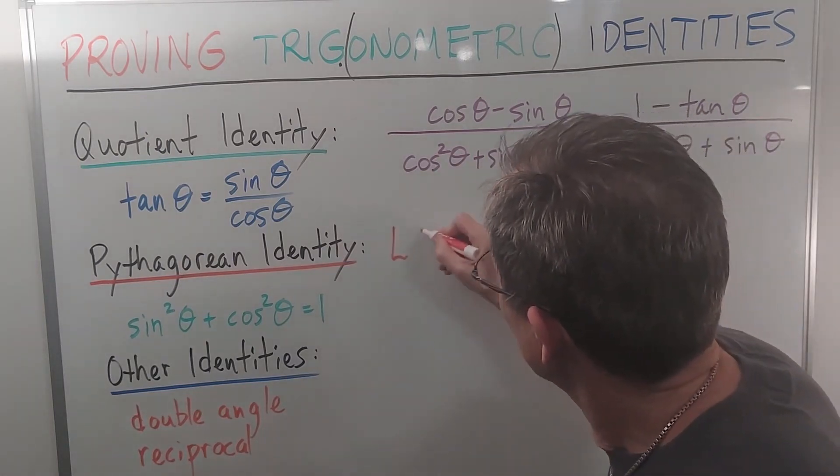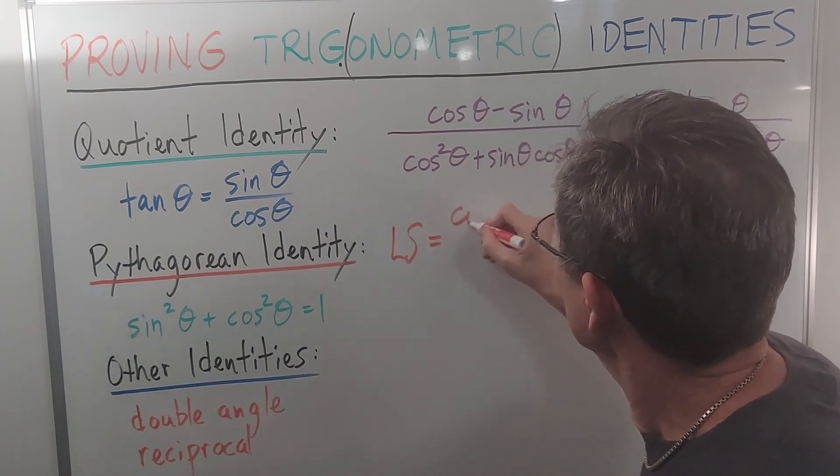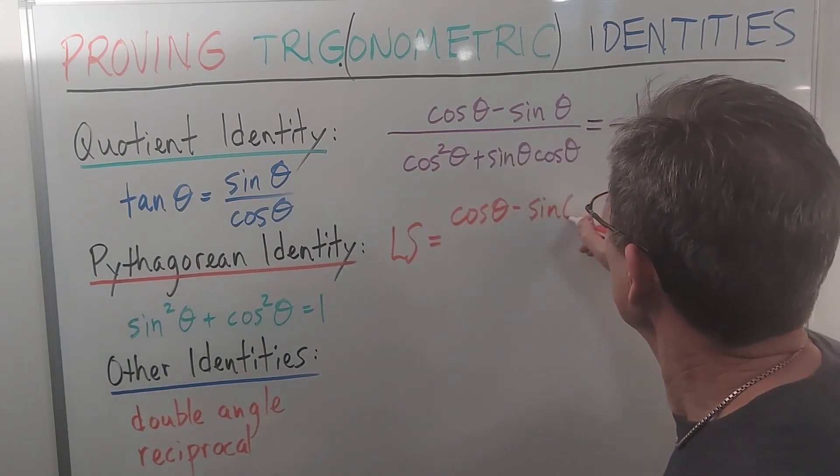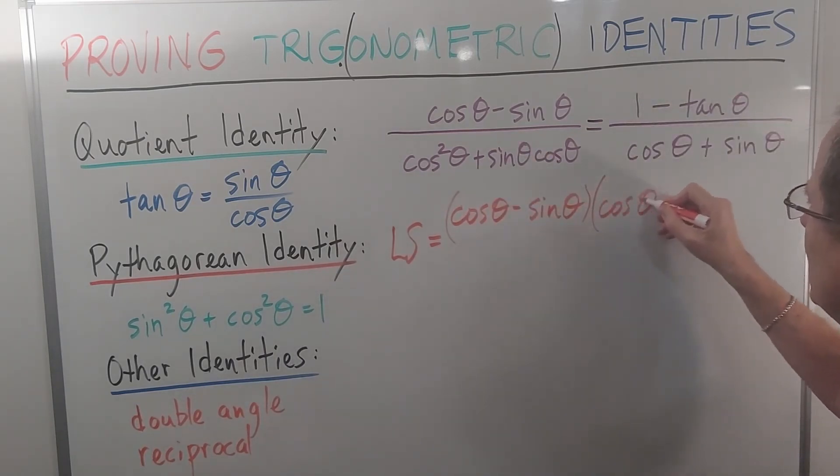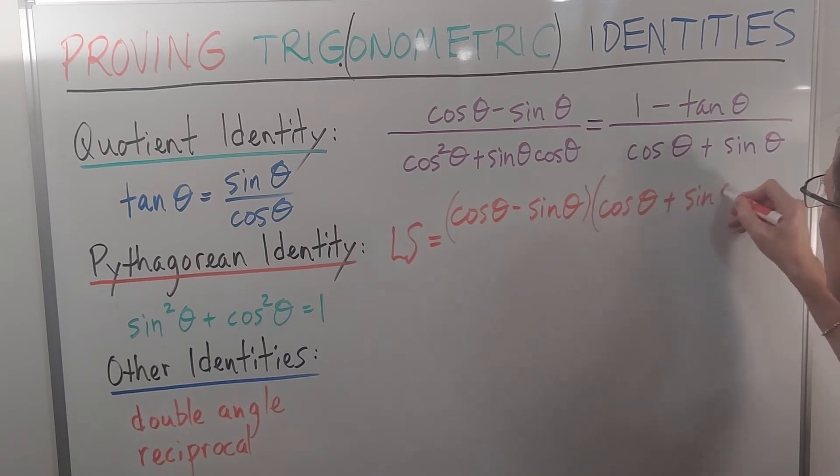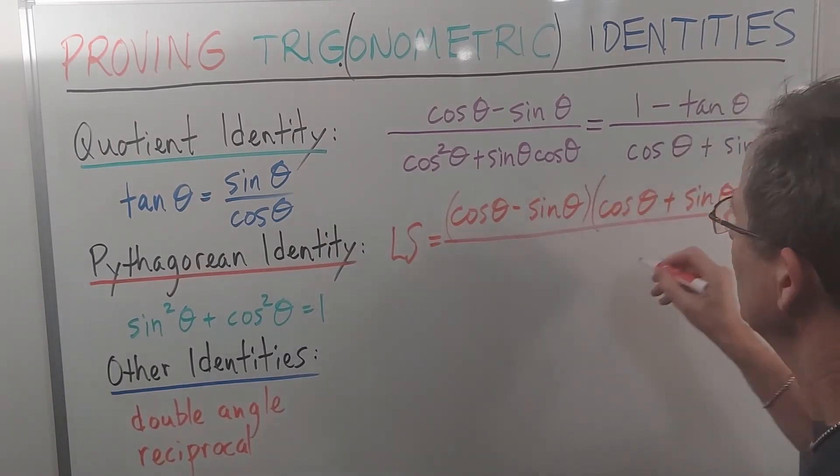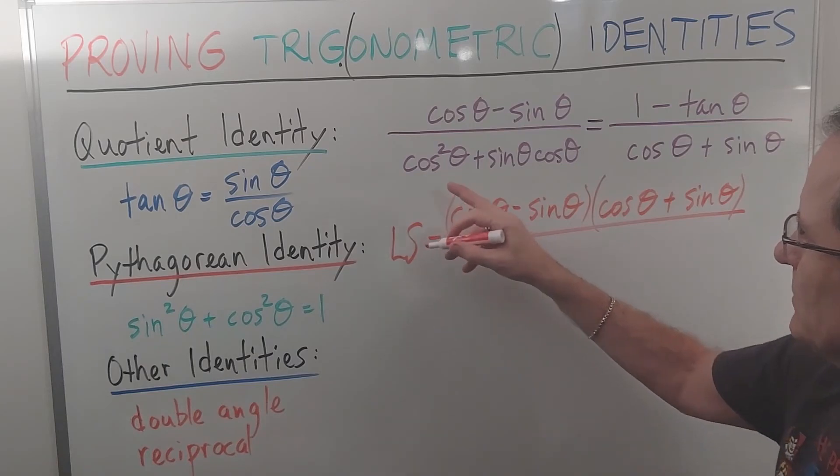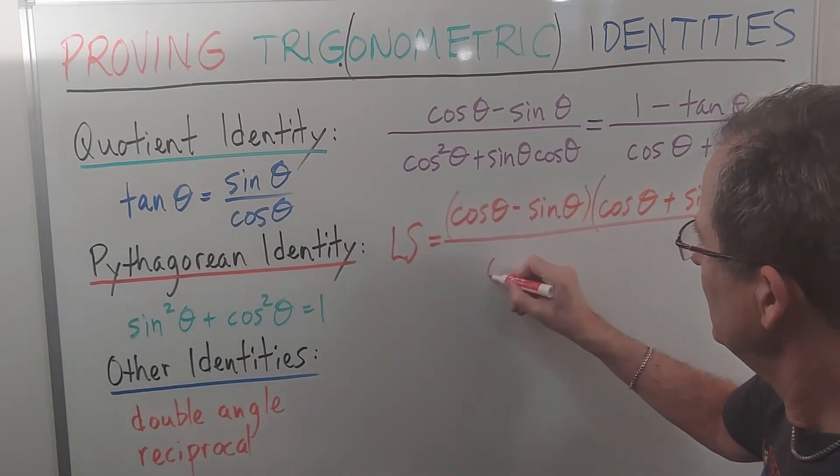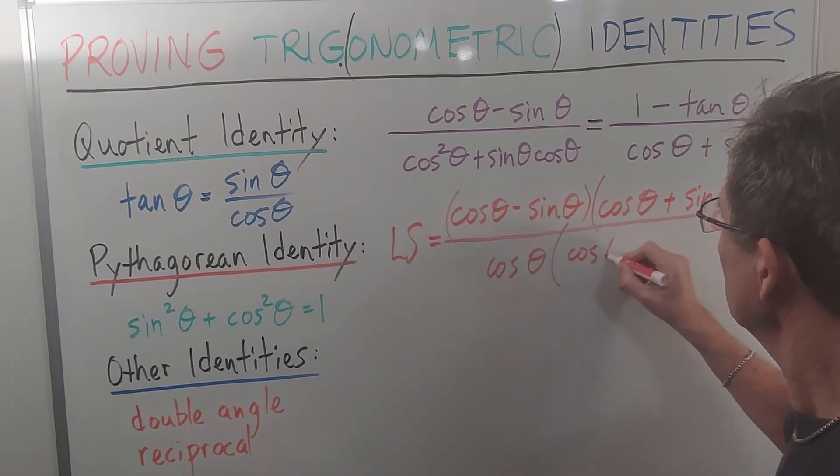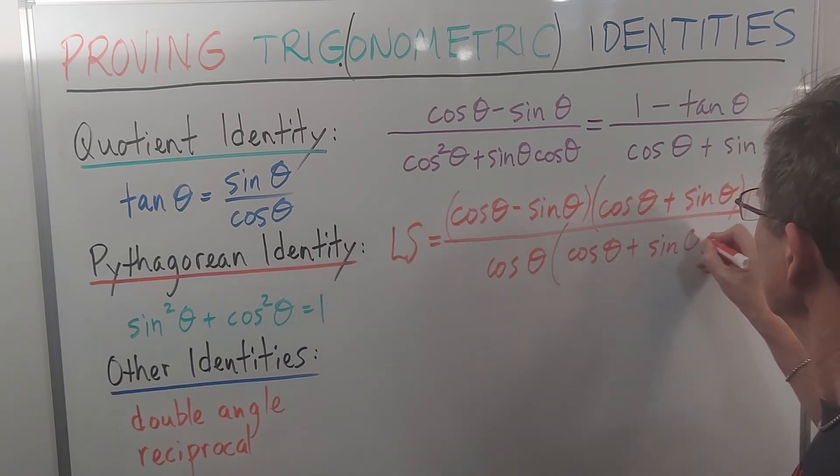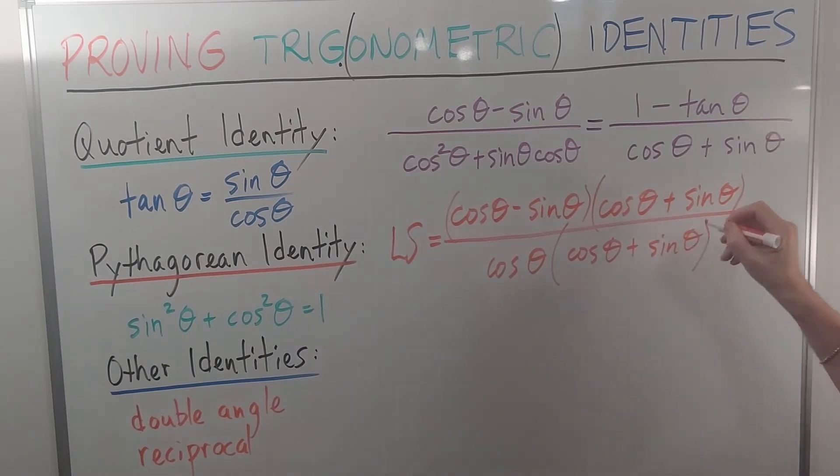So, the left-hand side will become cos θ minus sin θ, which is what I already have, times cos θ plus sin θ over... And to save time, let's factor a cos θ out of here, leaving me with cos θ plus sin θ. The right-hand side will just be 1 minus tan θ if I multiply by that denominator.